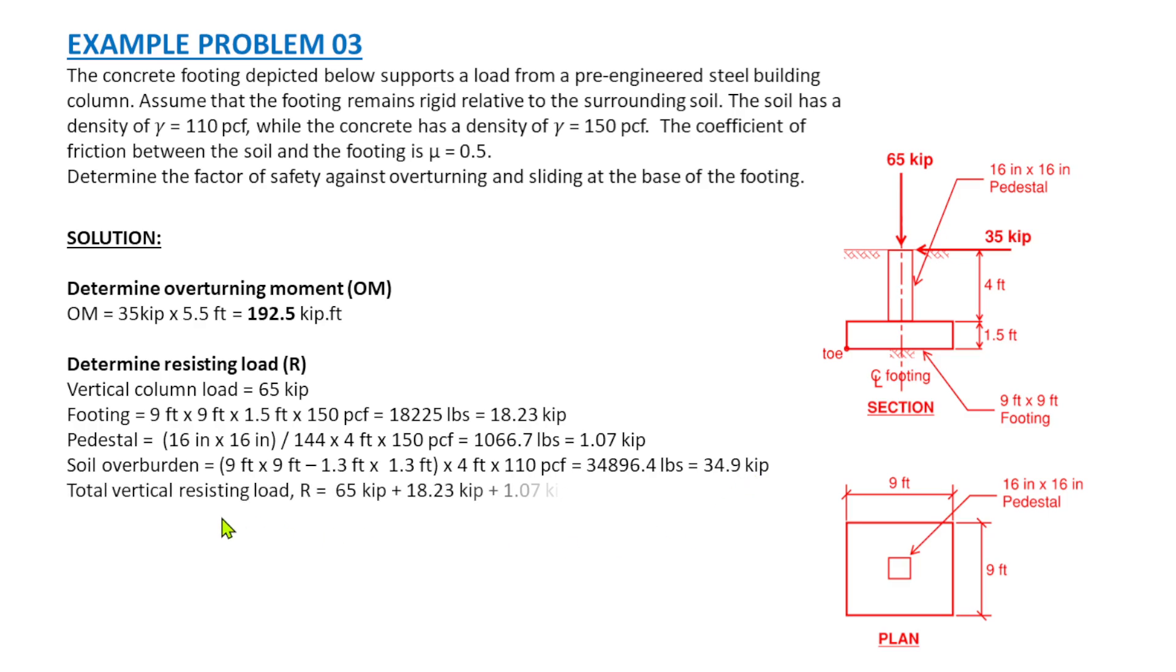Then the total vertical resisting loads are—this is all downward loads due to the column loads, soil, pedestal, and the footing. The total is 65 kips from the columns, 18.23 from the footing, plus 1.07 from the pedestal, and 34.9 kips from the overburden soil. So the total is 119.2 kips, that is for the vertical resisting load R.